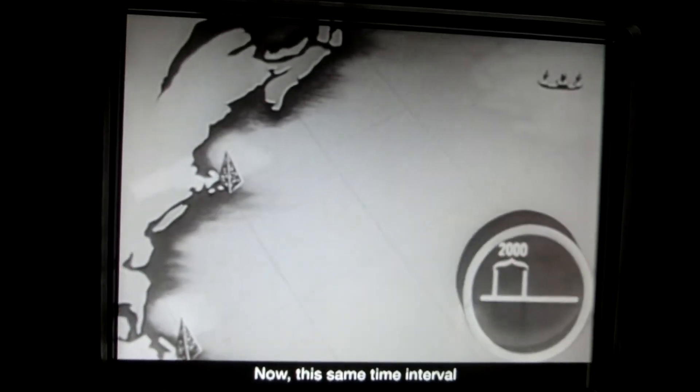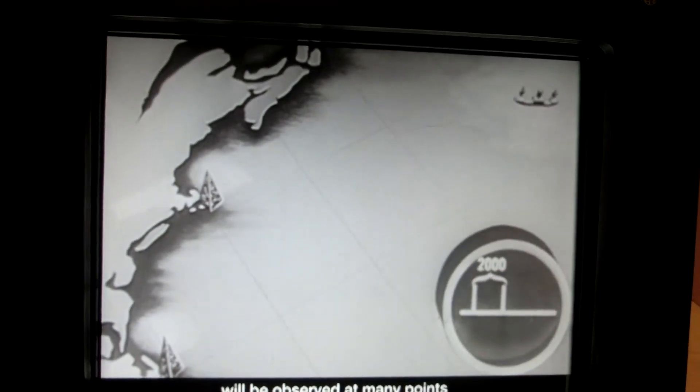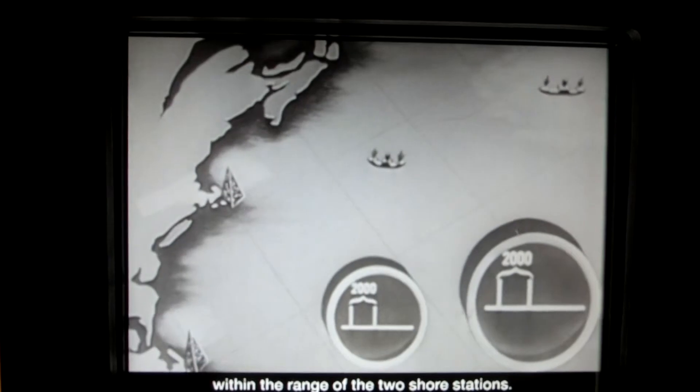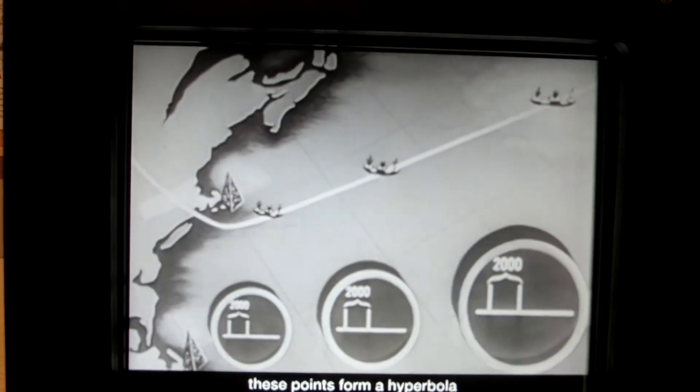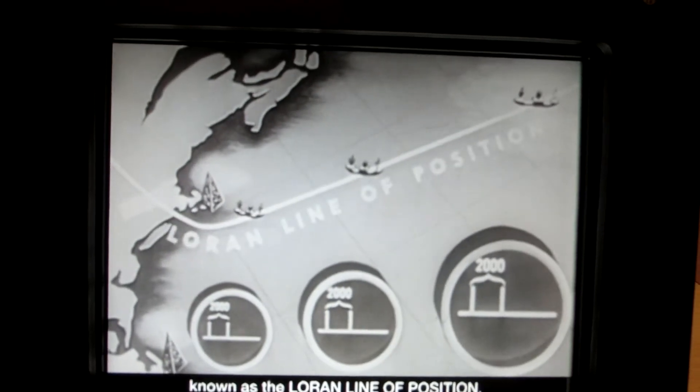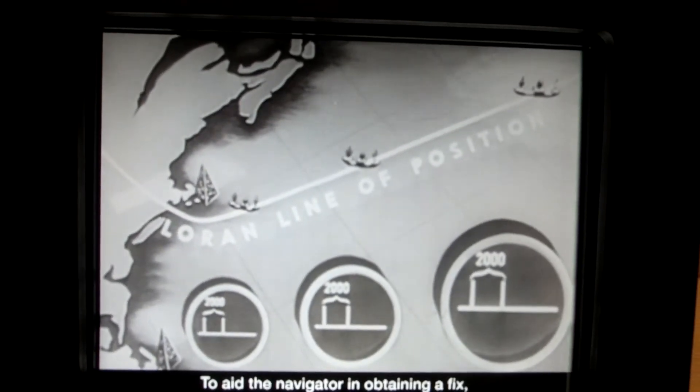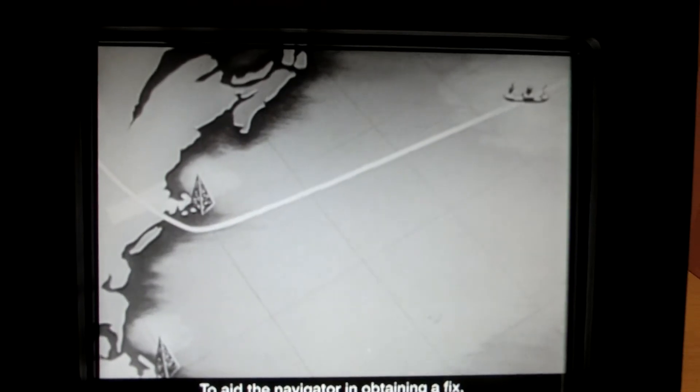Now, this same time interval will be observed at many points within the range of the two shore stations. And when connected, these points form a hyperbola known as the Loran line of position to aid the navigator in obtaining a fix.